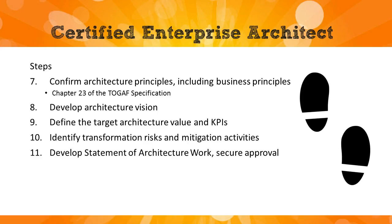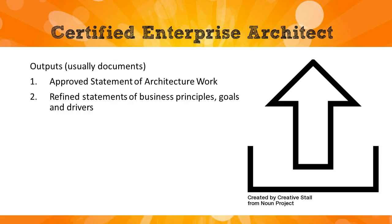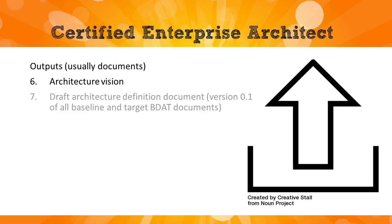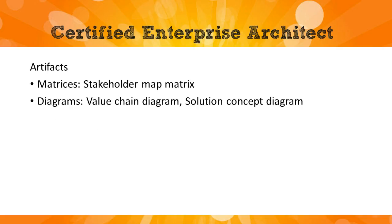Those are the 11 steps of the vision phase. The outputs are documents created during these steps. You've got changes to some existing documents, you've got a vision, the draft architecture document version 0.1 — a high-level draft of your architecture — a communications plan describing how you communicate with stakeholders, any additional content going into the architecture repository, and the artifacts listed on screen. The vision phase produces at least some diagrams and a matrix.